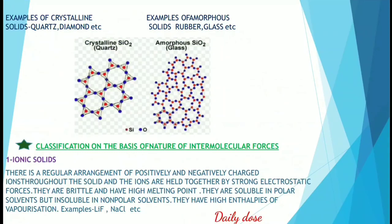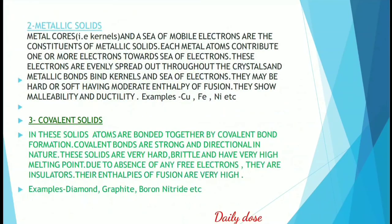Ionic solids are soluble in polar solvents such as water but insoluble in non-polar solvents such as hexane. When dissolved in water, the cations and anions separate. These solids have high enthalpies of vaporization. Examples include lithium fluoride and sodium chloride.